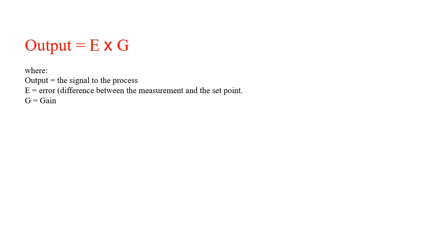But to reduce the offset, we can introduce another component K, which is known as the manual reset, where the operator sees the actual offset present and adjusts the manual input so that the measurement goes to the set point.